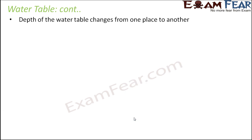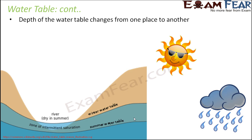The depth of the water table changes from one place to another — it is not constant. In some places it may be less deep, in others more deep. The water table depth also varies with season due to changes in precipitation. During the rainy season, there is heavy rainfall, so a lot of water falls on the ground and the water table is higher, because you have more water below the ground.